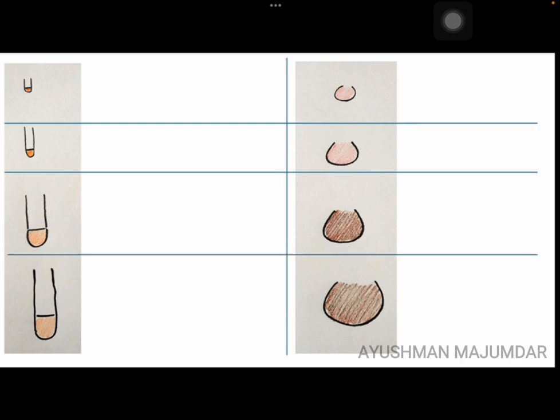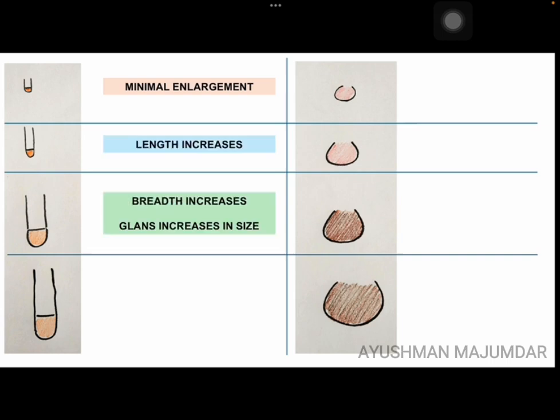Stage 1 means pre-adolescent period. In stage 2, there is minimal enlargement of the penis. In stage 3, the length increases. In stage 4, the breadth is increasing and the glans penis also increases in size. And in the last stage, the penis assumes an adult size.